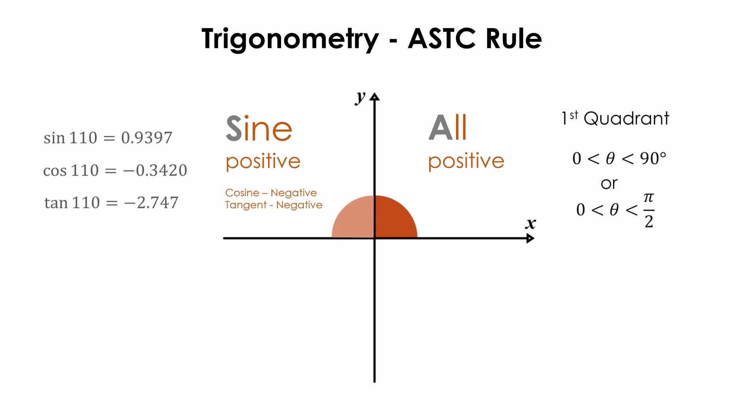For example, sine 110 degrees equals 0.9397, while cosine 110 degrees equals minus 0.3430, and tangent 110 degrees equals minus 2.747.